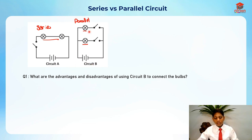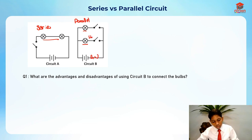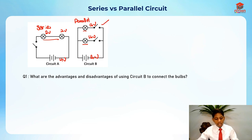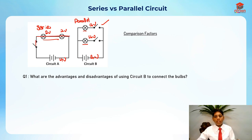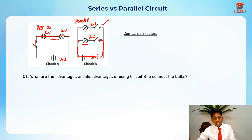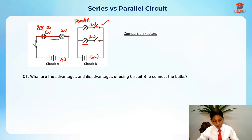The first advantage of circuit B is that even with two batteries, the bulbs remain at the same brightness. Each bulb receives four volts. Additionally, you can control the lighting of bulbs individually — in series, one switch lights both bulbs at the same time, but in parallel you can switch on one switch to light up only one bulb.